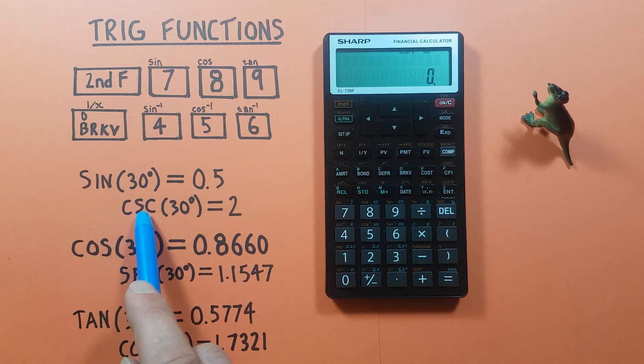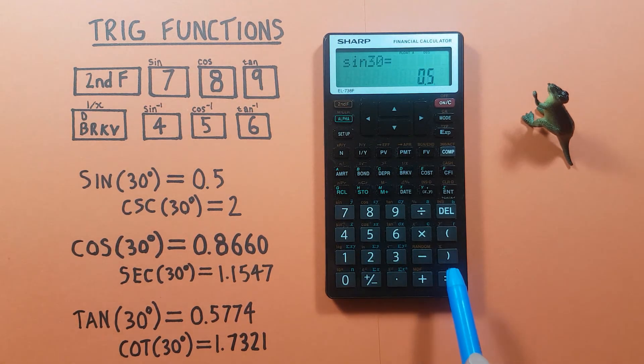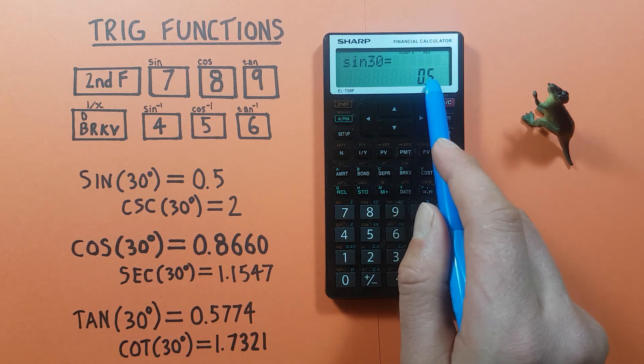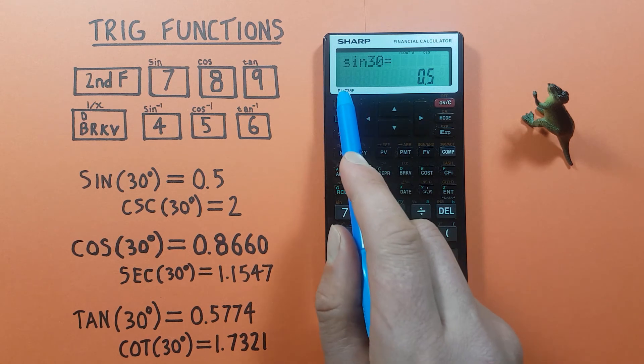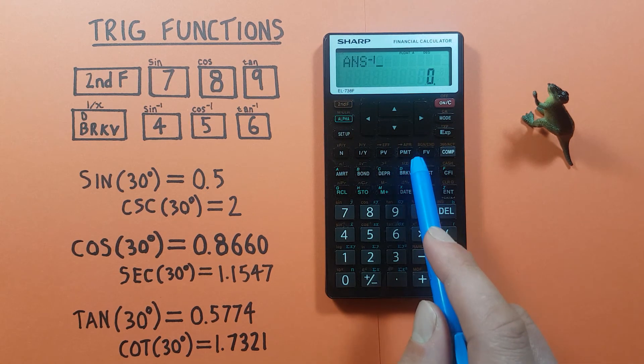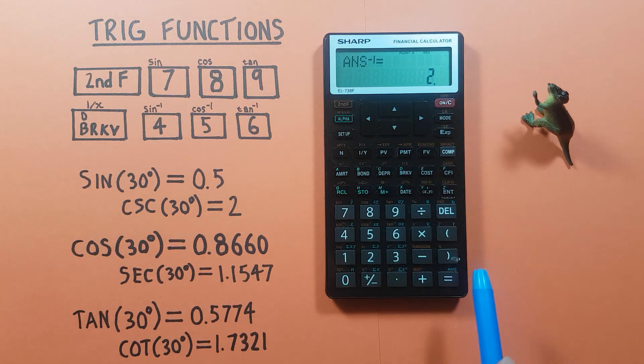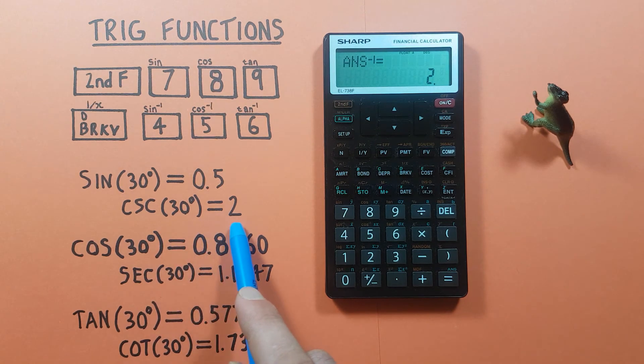So for example, for cosecant, first we do sine of 30 degrees: second, seven for sine, 30, there we go. That's what sine of 30 gives us, and then we need to inverse this with this key here, the second function of that. So second, there we go, answer to the power of negative 1, and this gives us 2. So we know the cosecant of 30 degrees is equal to 2.